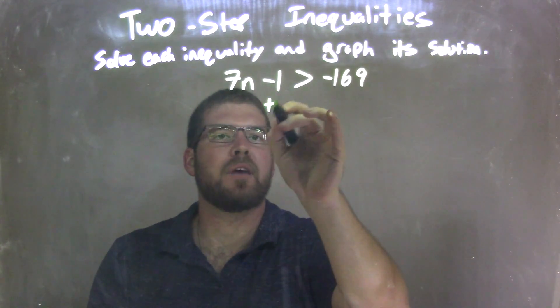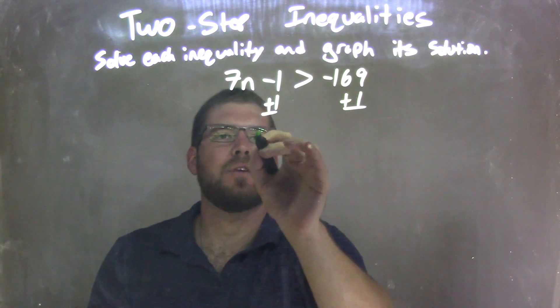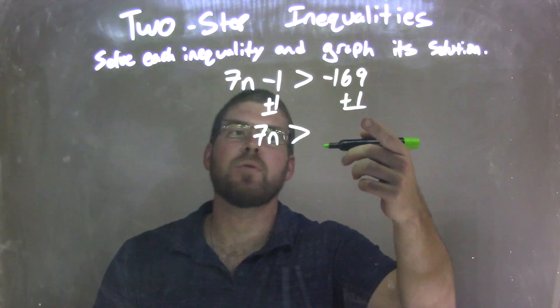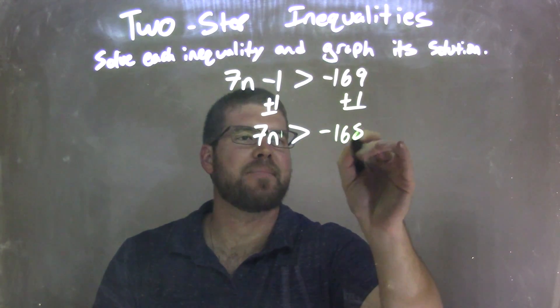My first step, I'm going to add 1 to both sides. When I add 1 to both sides, I'm left with 7n on the left is greater than negative 169 plus 1, which is negative 168.